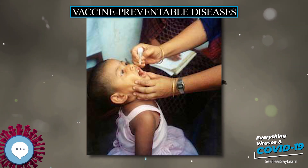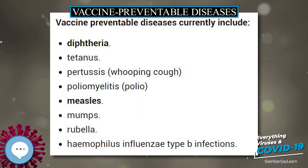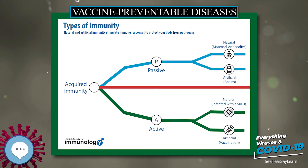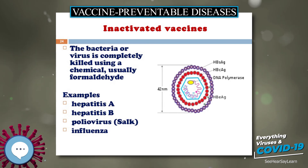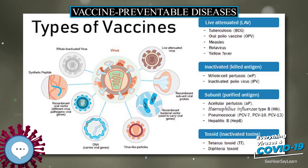If a vaccine-preventable disease is uncommon in a country, then residents of that country are unlikely to receive a vaccine against it. For example, residents of Canada and the United States do not routinely receive vaccines against yellow fever, which leaves them vulnerable to infection if traveling to areas where risk of yellow fever is highest — endemic or transitional regions.